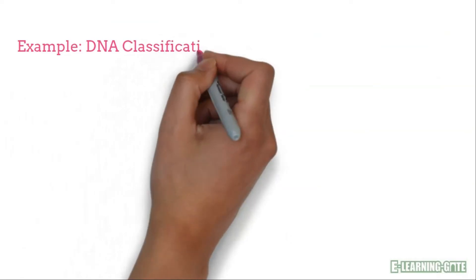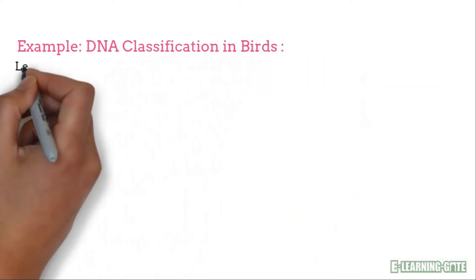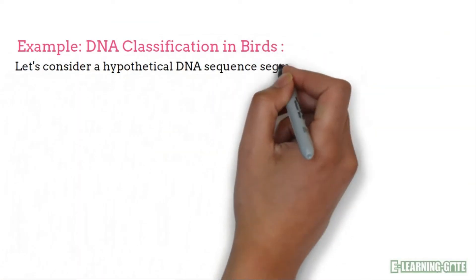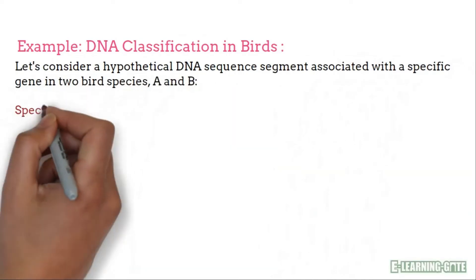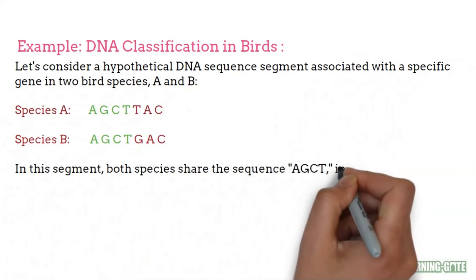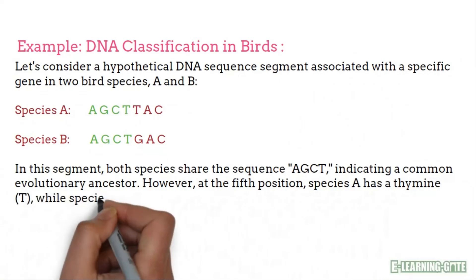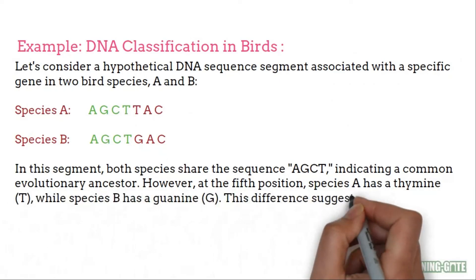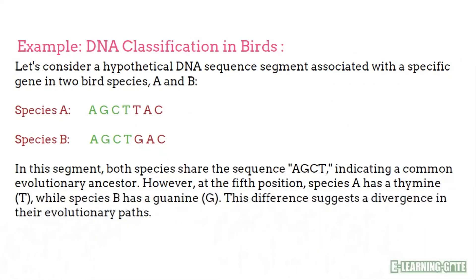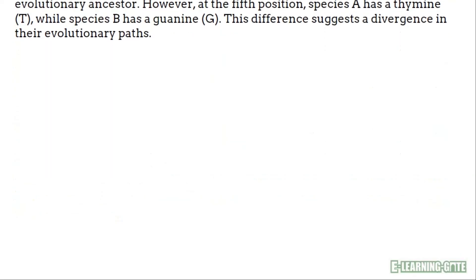Consider a hypothetical DNA sequence segment associated with a specific gene in two bird species, A and B. Both species share the sequence A, G, C, T — indicating a common evolutionary ancestor. However, at the fifth position, species A has a thymine (T) while species B has a guanine (G). This difference suggests a divergence in their evolutionary paths.